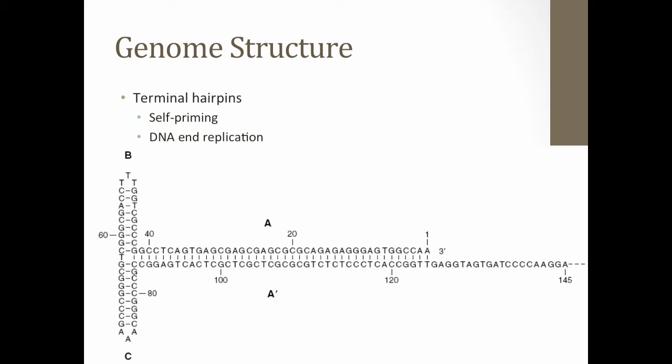On genome structure: I mentioned previously that linear was in quotes. That's because you don't have a covalently closed genome, but you do have extensive secondary structures — loops at the terminal hairpin ends and complementarity through the three-prime end. These loops are your terminal hairpins. Thinking back to molecular biology: what do you need for DNA replication? You need a free three-prime OH — which this free three-prime end provides. So these genomes are both self-priming and serve as a template for replication. These terminal hairpins help solve the problem of how you replicate DNA ends.